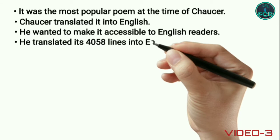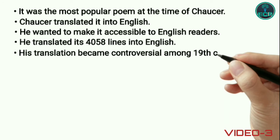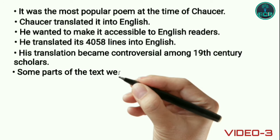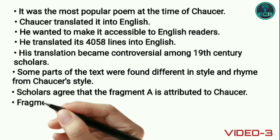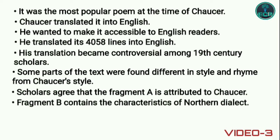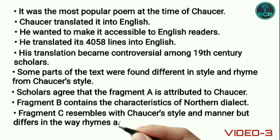But his translation became controversial among 19th century scholars, because some parts of the text were found different in style and rhyme from Chaucer's style. Scholars agree that Fragment A is attributed to Chaucer, while Fragment B contains the characteristics of Northern dialect. Fragment C resembles Chaucer's style and manner but differs in the way that rhymes are constructed.